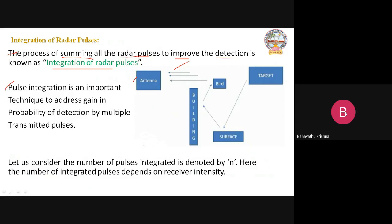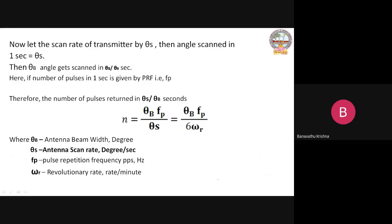So it is improving the detection technique. Let us consider the number of pulses integrated, denoted as N. How many number of pulses are received at the radar receiver station? The number of integrated pulses depends on receiver intensity. The first point: the scan rate of the transmitter is denoted by theta S, and angle scanned in one second equals theta S.